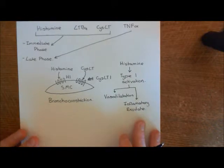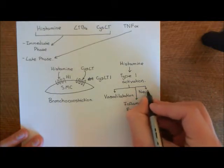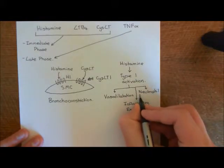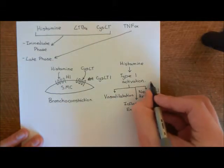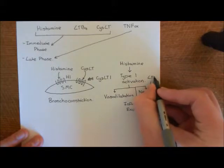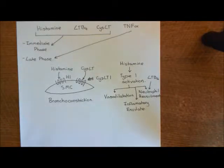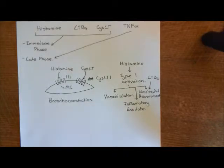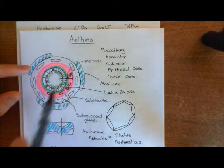Both bronchoconstriction and the swelling of the lamina propria as the inflammatory response occurs are going to lead to obstruction of the lumen of the airways. Finally, you're also going to get leukocyte extravasation — specifically neutrophils — recruited by type 1 activated endothelial cells. Leukotriene B4 is also involved in neutrophil recruitment; it's a very strong neutrophil chemoattractant, increasing neutrophil extravasation even more. So neutrophils pour into the lamina propria, along with the inflammatory exudate and vasodilatated blood vessels, leading to expansion of the lamina propria into the lumen.